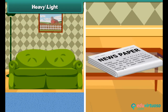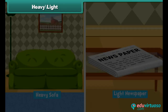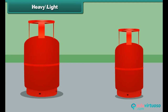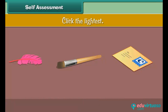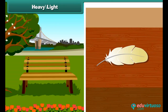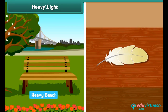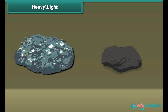Things which are difficult or impossible to lift are heavy, and things which can be carried easily are light. The cylinder on the left is heavy and the cylinder on the right is light. The stone on the left is heavy and the stone on the right is light.